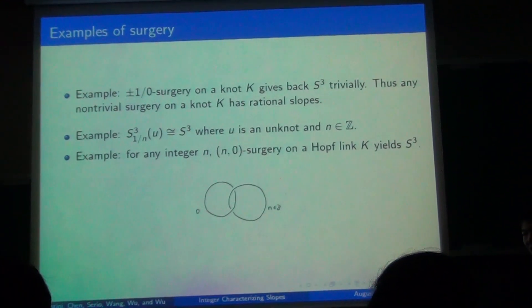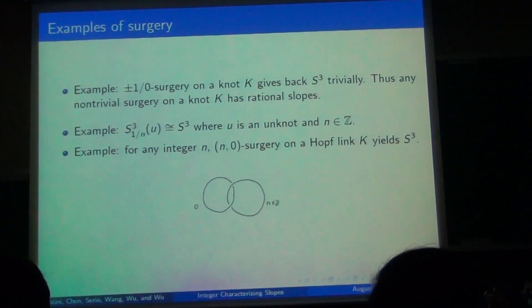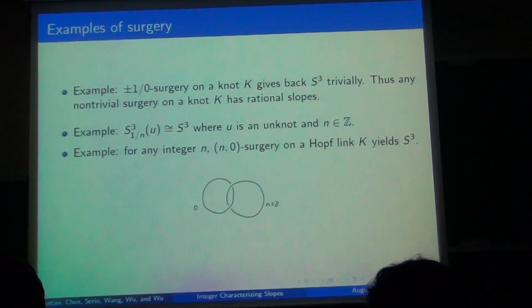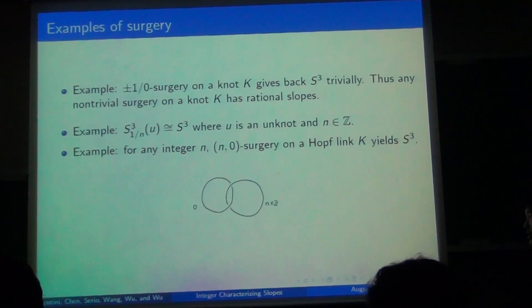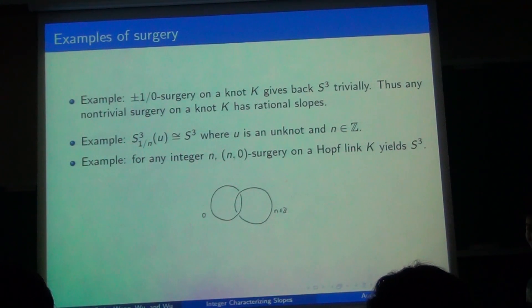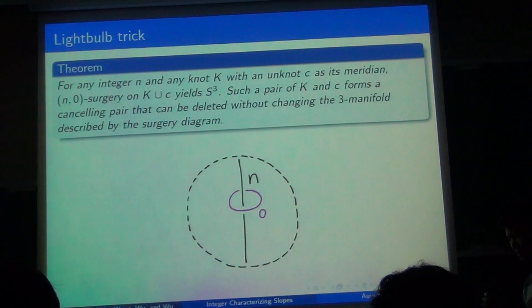So you can see some examples here. If you take zero surgery on any knot, it just corresponds to drilling out that tubular neighborhood, and then gluing it back the way it was. So it just gives S³. Using the blowup and twist, you can show that one over n surgery on the unknot also gives S³. And the slam dunk shows that if you have a hoplink with coefficients zero and n, that also gives S³. So one final consequence of the slam dunk is that if you have a zero-framed unknot on any knot, then you can remove both the knot and the unknot from any surgery diagram that contains them.